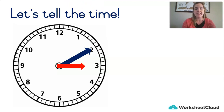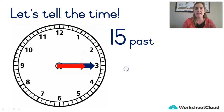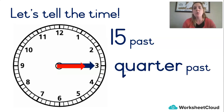What time is this? 5 past 3. We count in fives all the way around the clock to help us tell the time — this is 5 minutes past 3. This is 10 past: count 5, 10 — 10 past 3. 5, 10, 15 — that's 15 past, but remember we don't actually say 15 past, we say quarter past. Both are right, but it's more normal to say quarter past.